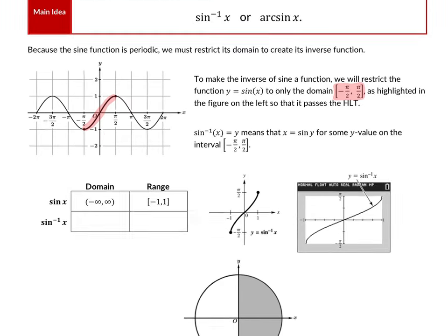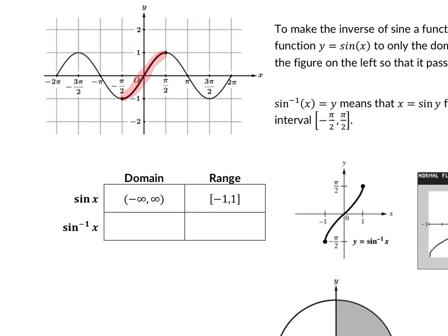Sine of x has a domain of all real numbers and a range from −1 to 1. Its inverse flips the domain and range. So the domain of inverse sine is [−1, 1] — that was the range of regular sine. We'd love to write the range as all real numbers, but we have to restrict it to only the highlighted section from negative π/2 to π/2. That means when you give me answers today, you will only answer with an angle between negative π/2 and π/2.